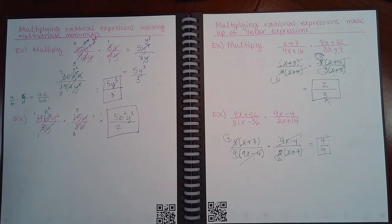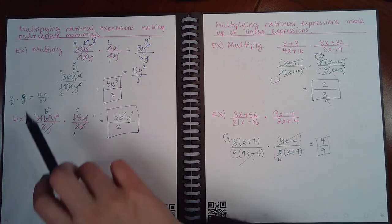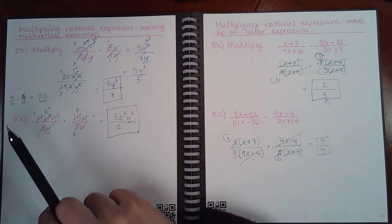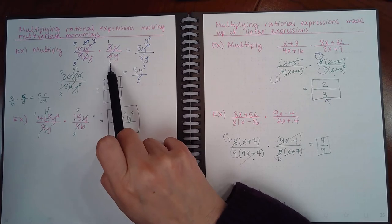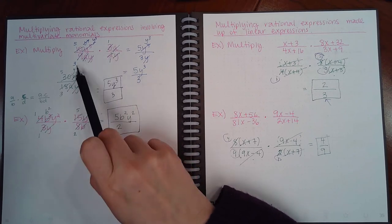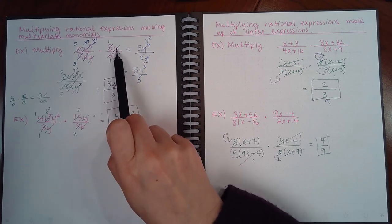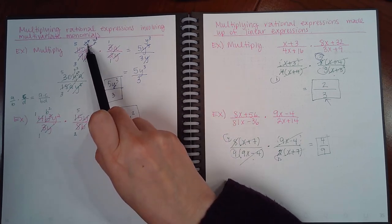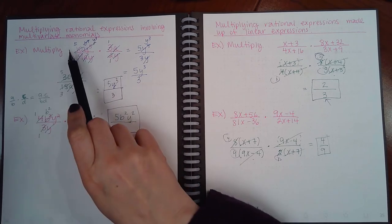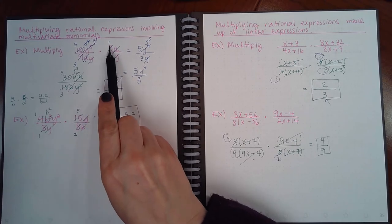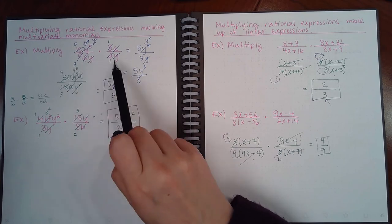Multiplying rational expressions: you can reduce before you multiply or multiply first and then reduce, but it is easier to reduce first. We reduced 10 and 2 by 2, giving 1 and 5; reduced 3 and 9 by 3, giving 1 and 3; canceled the a's; and reduced y with one of the y's, then another y with another y, leaving y³. The result is 5y³ on top and 3 on the bottom.